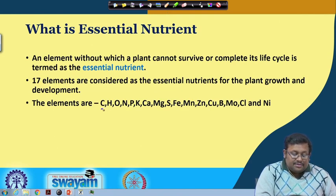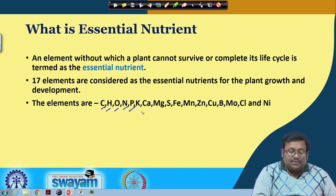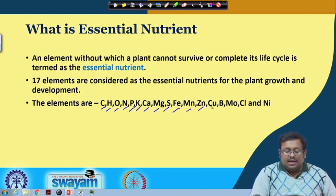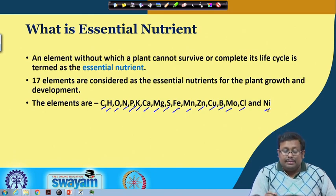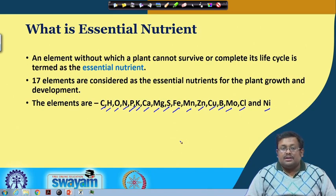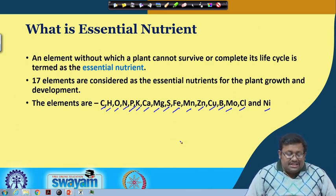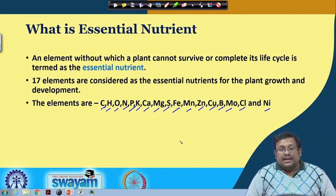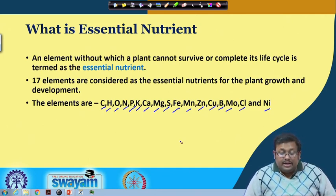These 17 elements are: carbon, hydrogen, oxygen, nitrogen, phosphorus, potassium, calcium, magnesium, sulphur, iron, manganese, zinc, copper, boron, molybdenum, chlorine, and nickel. Remember, these 17 elements are considered essential nutrients for the plant because a plant cannot complete its life cycle without them, regardless of the quantity required.